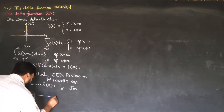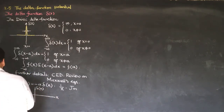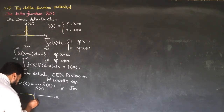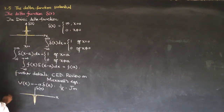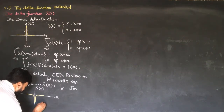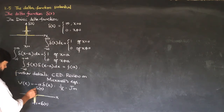We can plot this delta function potential: this is δ(x) versus x, and the potential will start from here and then go down — a spike downward. At this point we have minus alpha times δ(x). Since the value is automatically minus, it is written as the alpha·δ(x) potential.